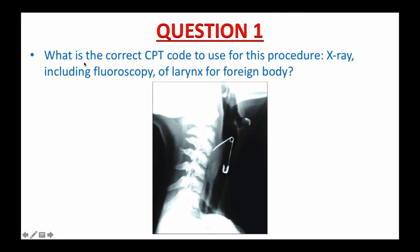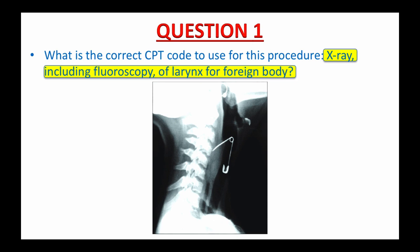Question number one: what is the correct CPT code to use for this procedure — x-ray including fluoroscopy of larynx for foreign body? Foreign body ingestion is less common in adults than in children, but still occurs. In adults, fish and chicken bones are the most common foreign body types, and the oropharynx and pharynx are the most common locations. Intentional foreign body ingestion often occurs among patients with psychiatric disorder — I believe it's happened in this case with a safety pin stuck in the throat. Please pause the video and find the right code.